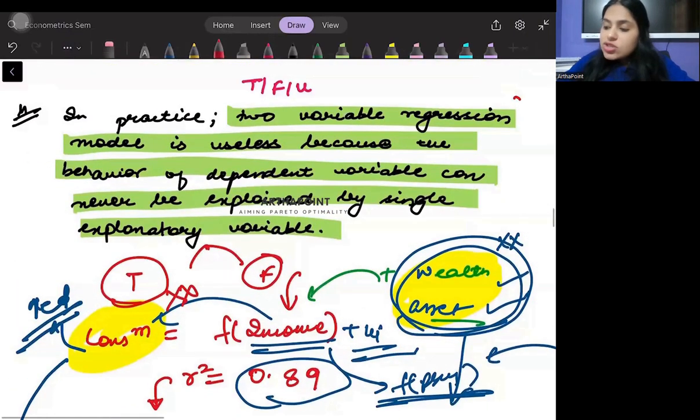So we may not just say that always one variable is enough and we may not say always that more than one variable is enough. It depends from model to model. So it's neither always true nor always false. Okay.